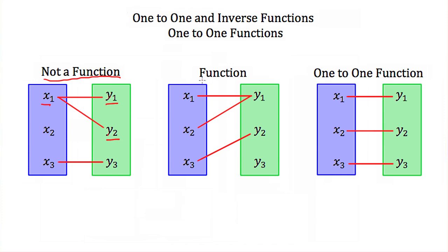In our second mapping diagram, we do have a function. Every x value or every domain value has one y value associated with it. x1, x2, and x3 all have their own y value. But x1 and x2 have the same y value associated with them — that's okay because each one only has one y value. It's okay that they share the same range value, but that means this is not a one-to-one function. It's just a function.